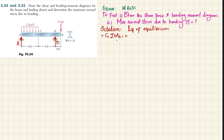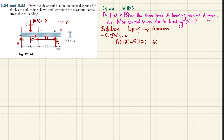Writing the equilibrium equation: −A×12 + (2×6)×9 − 6×2 = 0, which gives −12A + 12×9 − 12 = 0. Solving this, A = 8 kips.